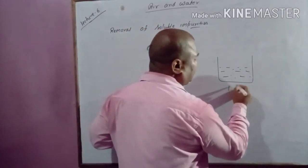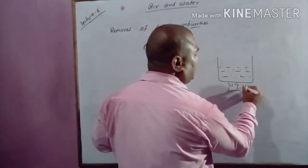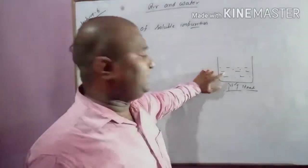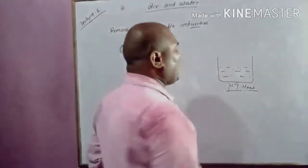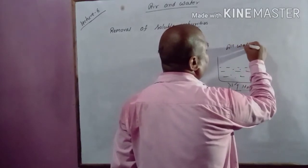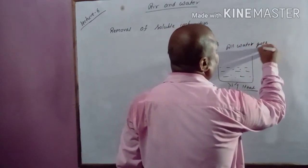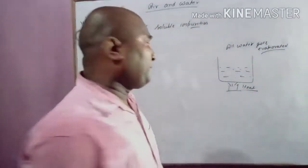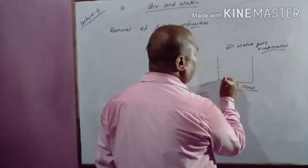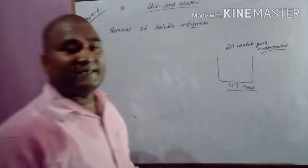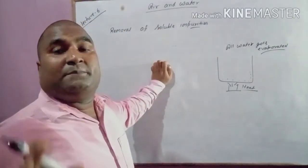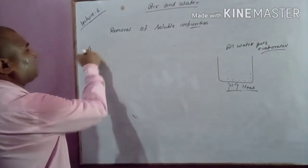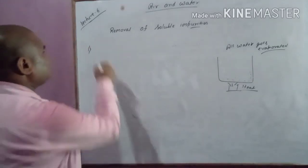What you do is you heat the water along with the soluble impurity. When you heat it, all the water gets evaporated and the salt remains in the container. Like this, we can separate soluble impurity from water. So the first process for removal of soluble impurity is evaporation.